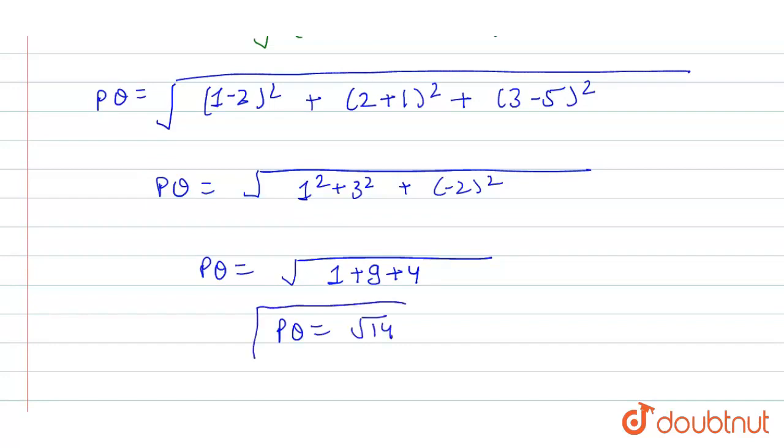So our distance between point P and foot of perpendicular is √14, and Q coordinate is (1, 2, 3).